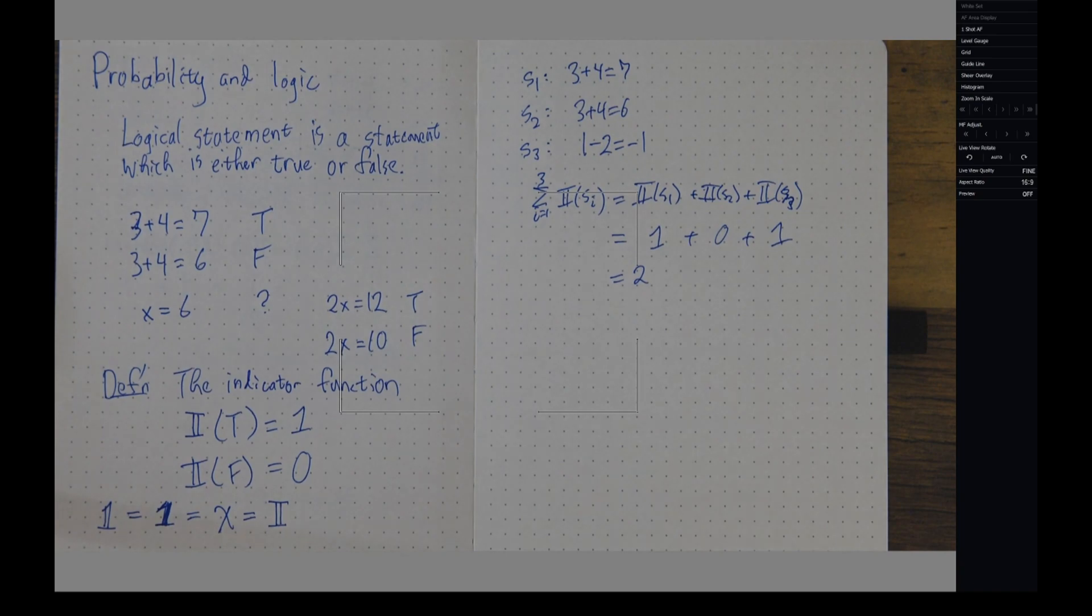This property, that summing up indicator functions counts the number of things which are true in a collection, is going to be very helpful later on in the course. So that's why I'm bringing it up now.